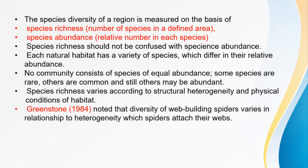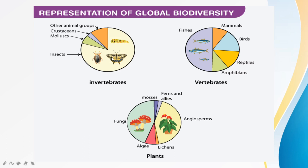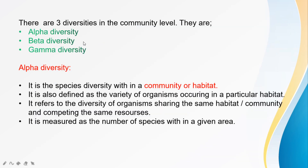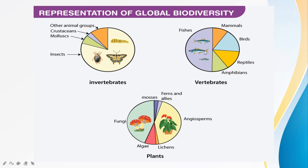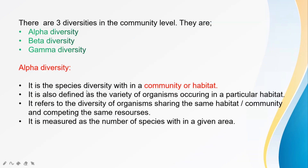In 1984, a representation of global diversity was produced. In a given area, there are insects, mollusks, invertebrates, and other species. In a community, we find mammals, birds, reptiles, and plants such as algae and fungi — all representing species diversity. Species diversity is examined at the community level through three types: alpha diversity, beta diversity, and gamma diversity.